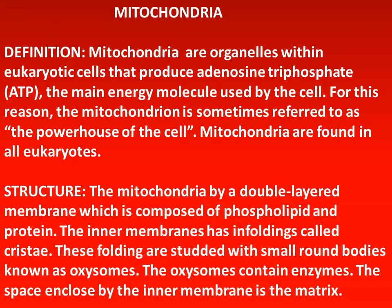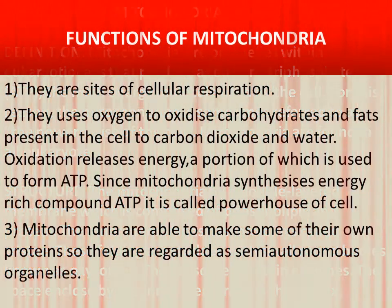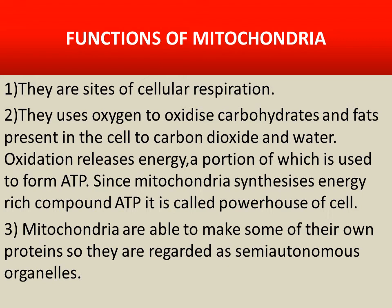Structure: the mitochondria is surrounded by a double-layered membrane composed of phospholipid and protein. The inner membrane has infoldings called cristae. These foldings are studded with small round bodies known as oxysomes. The oxysomes contain enzymes. The space enclosed by the inner membrane is the matrix.